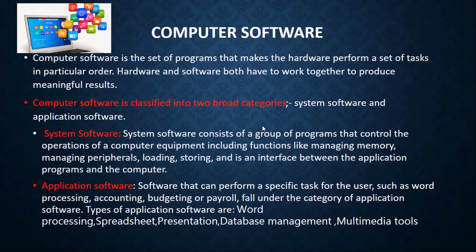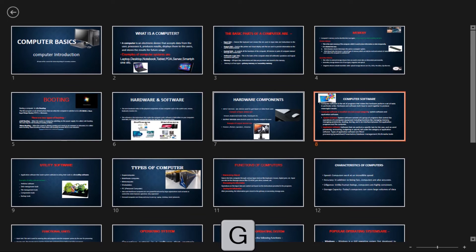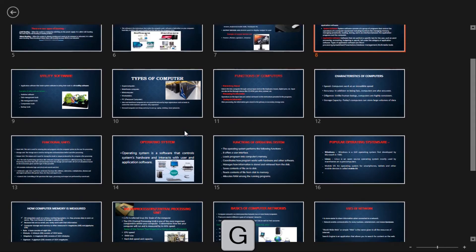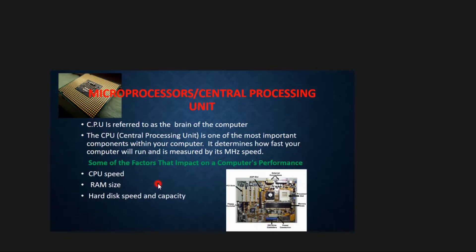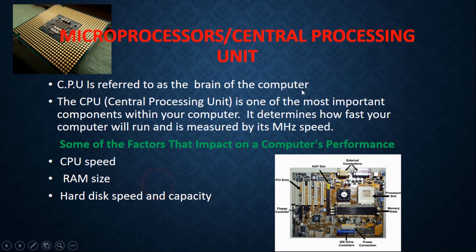Then the third shortcut is by displaying a thumbnail of every slide. Just press G and the thumbnails of all your slides will pop up. Then you can select the slide you want to jump to and it will take you to that slide.